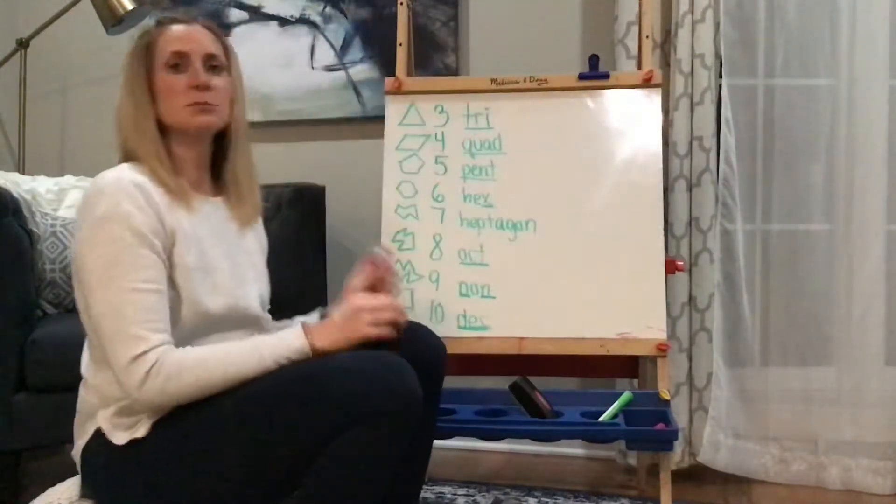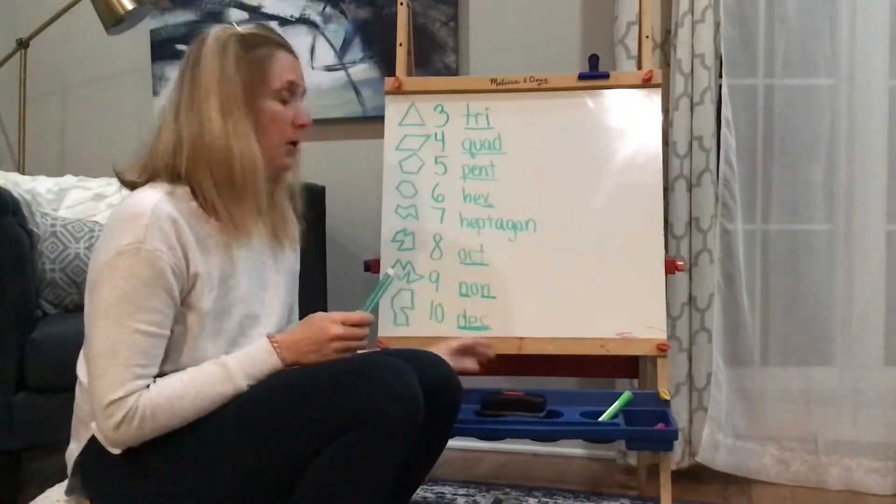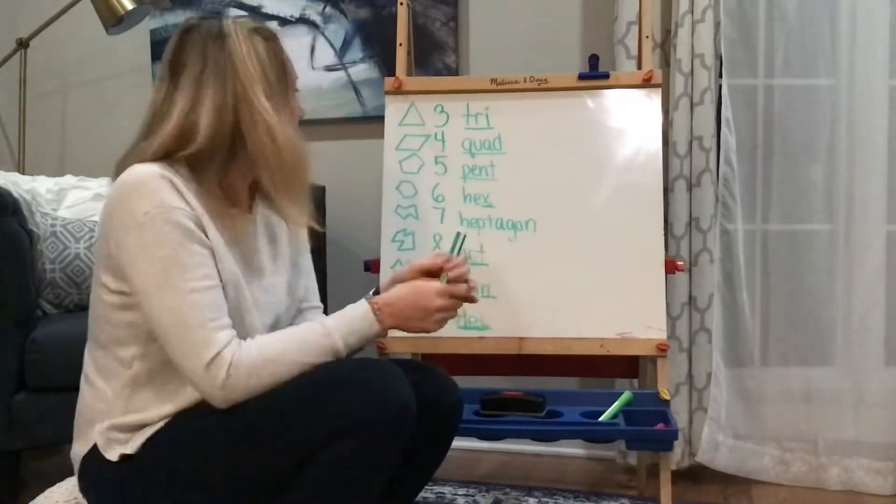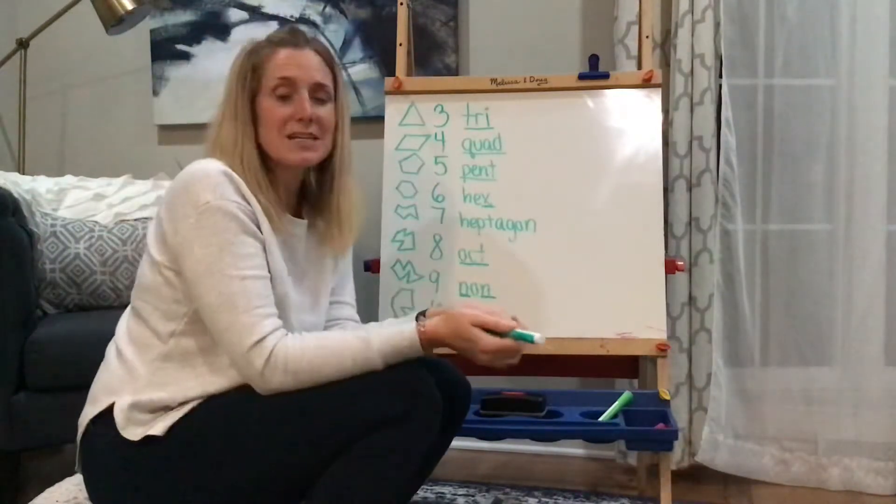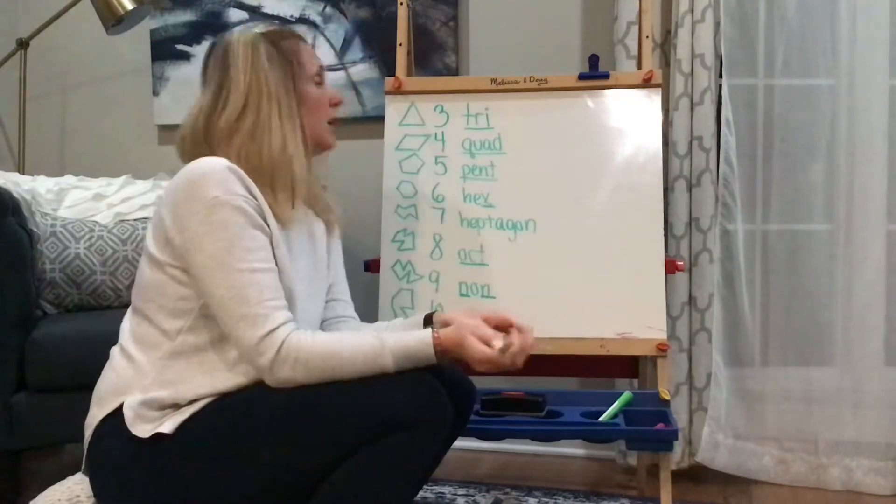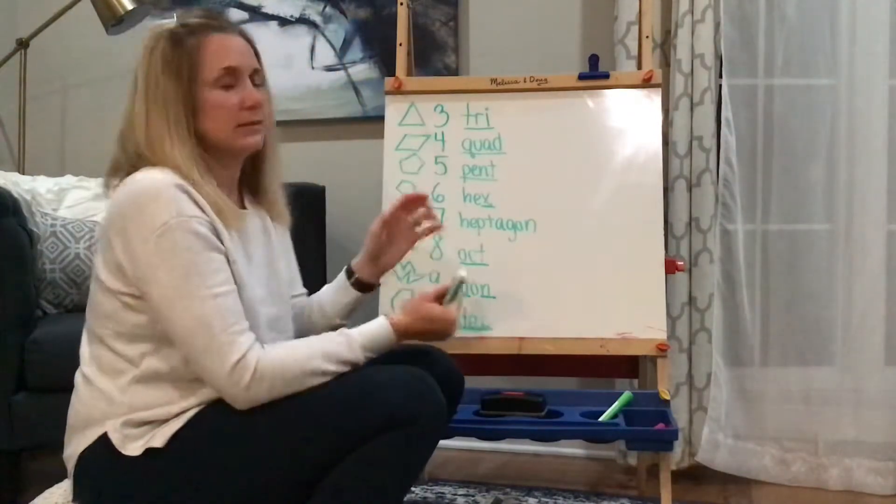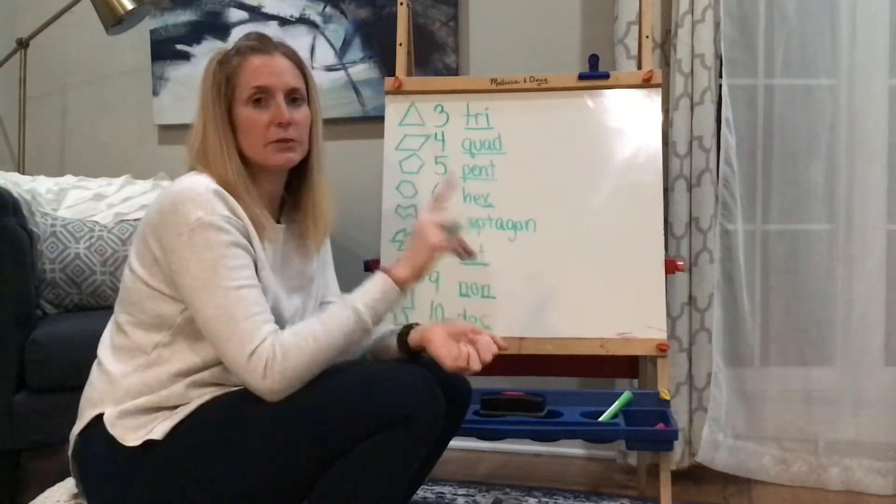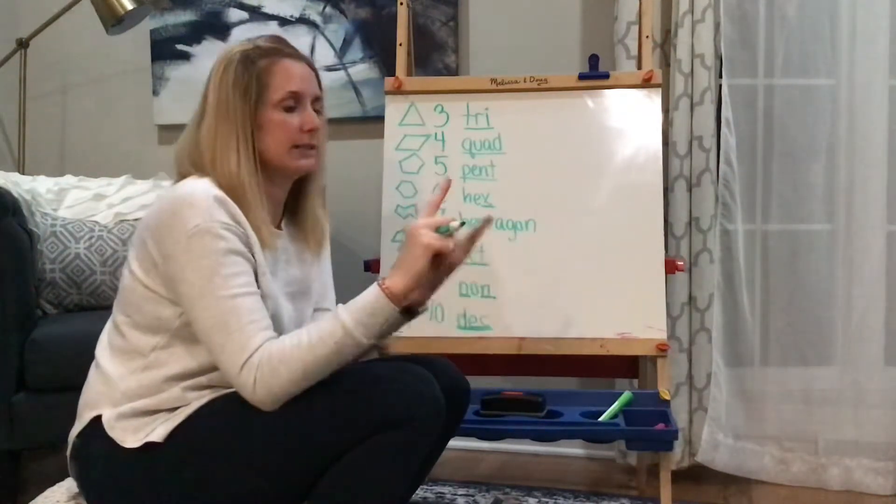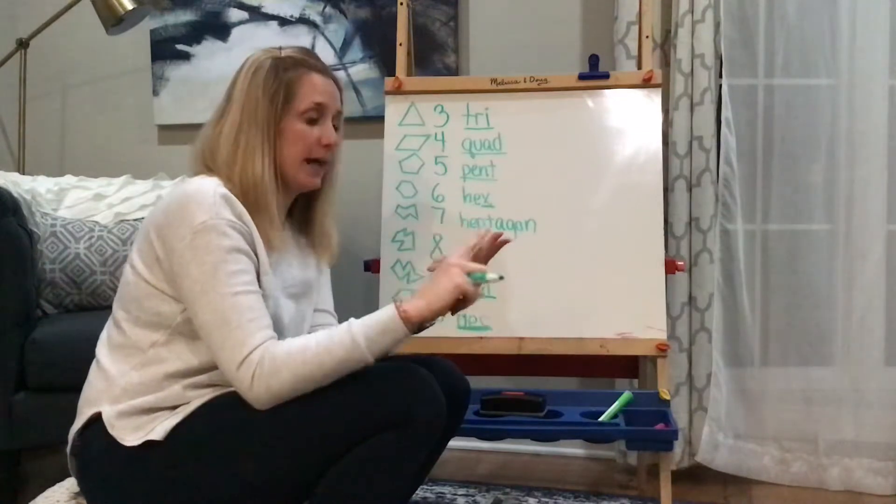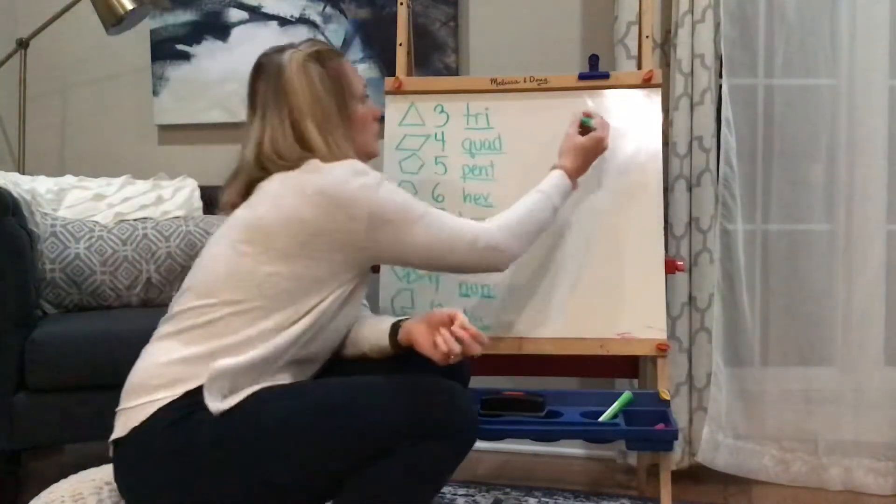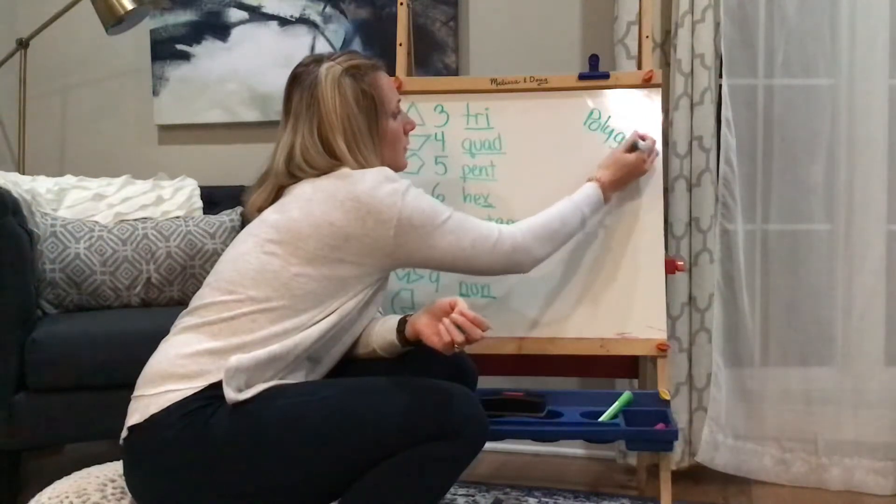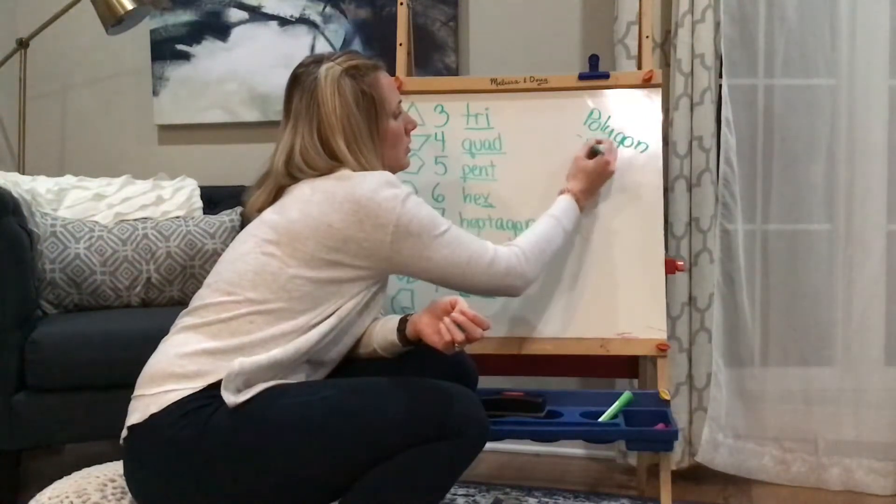Hey guys, so we're going to talk some more about polygons. Polygons are 2D shapes because they're flat. We're going to try to remember all the names of all these polygons. The first thing you need to do when you see a polygon is count the number of sides. We know a polygon has to have straight lines and it has to be closed. I'm going to write that over here just for a quick jog of our memory: polygon, straight lines, closed.